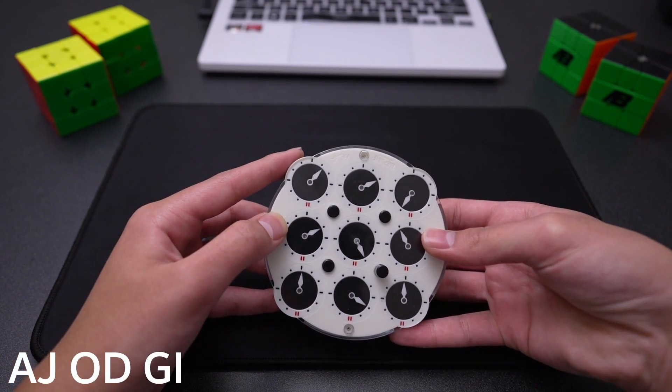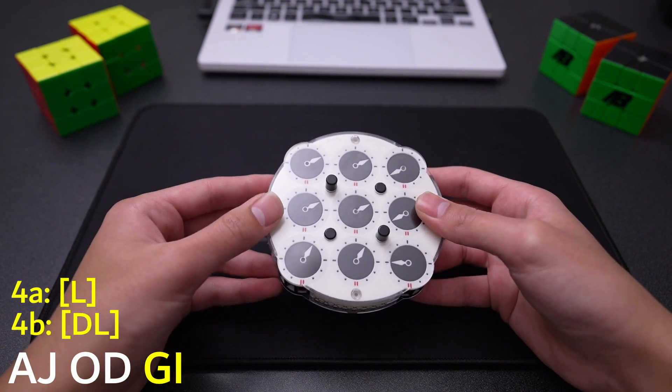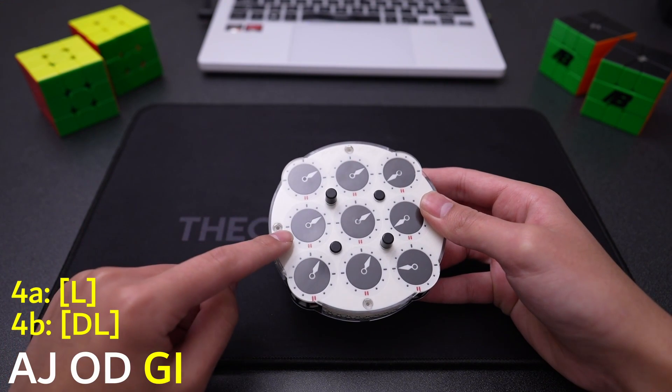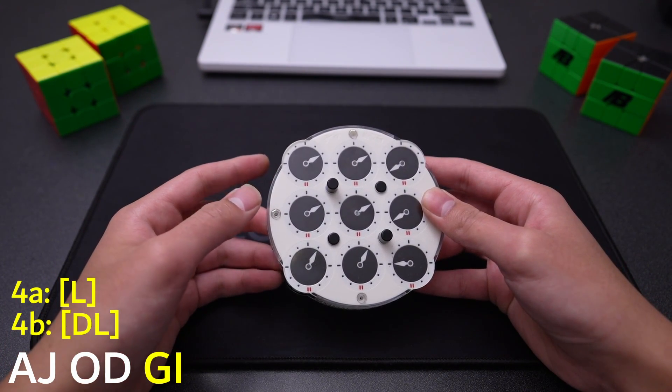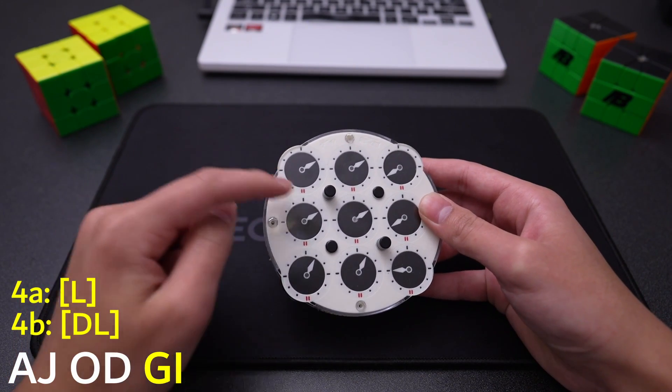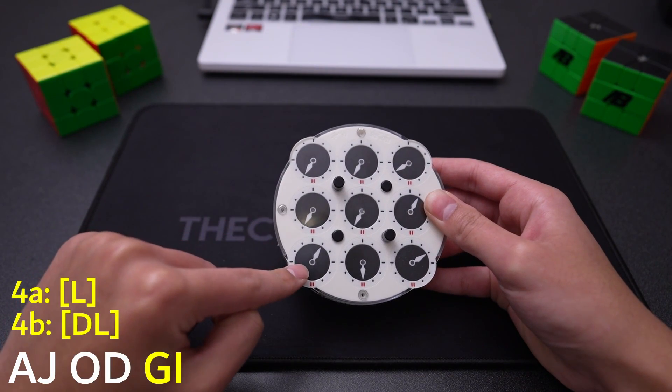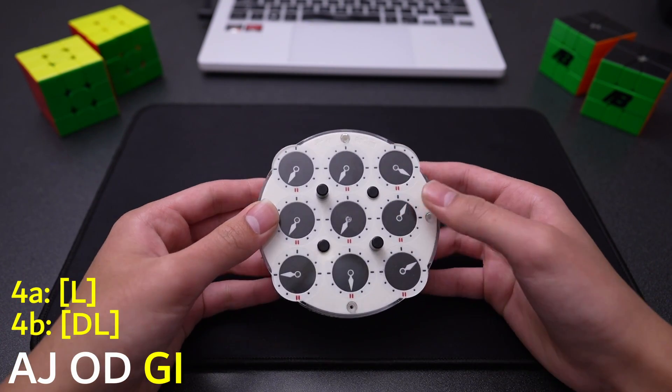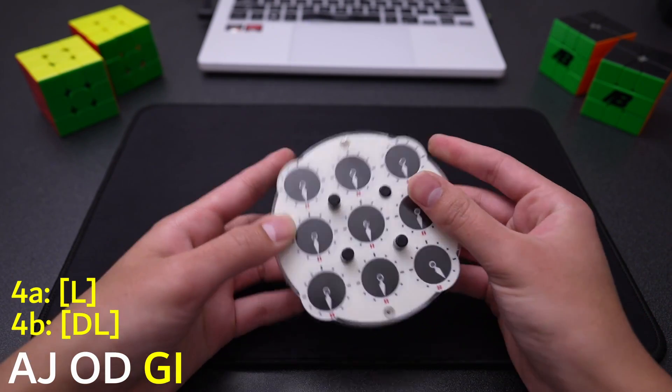So all the intuitive moves are the same as normal, and then here is our last memorized pair. Our reference clocks do change for this, so it's L for the left hand and DL for the right hand. We memorized GI, so we're going to move L to the G position, which is negative 5 relative to the top, and then we're going to move our right-hand reference clock to I, which is negative 3. And then we just proceed as normal. The rest of the solve is the same as usual.